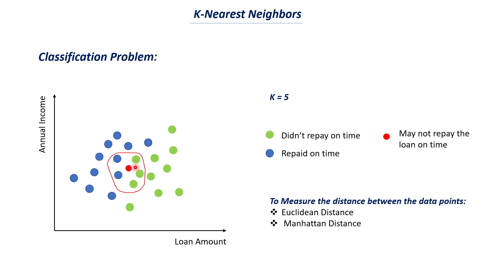This is how KNN works — it tries to find the nearest neighbors to the new data point without drawing a boundary; that was just for visual understanding. It finds the distance between the new data point (the red circle) and all other data points, then chooses the 5 points with minimum distance. The distance measures we use are Euclidean distance and Manhattan distance. We mainly use Euclidean distance, and at the end of the video I'll tell you when to use Manhattan distance.